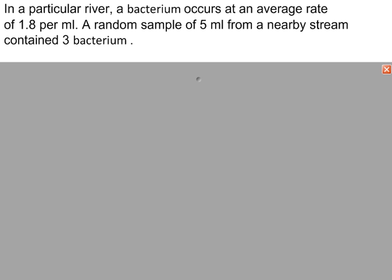In a particular river, a bacterium occurs at an average rate of 1.8 per milliliter. A random sample of 5 milliliters is taken from a nearby stream which contained 3 bacterium. So the 3 will become our test value.